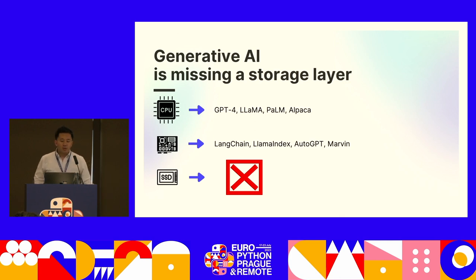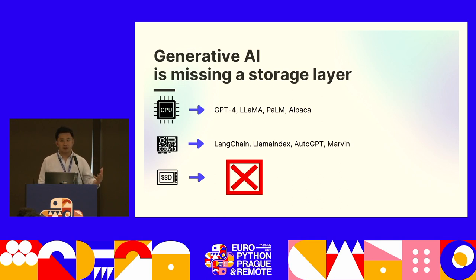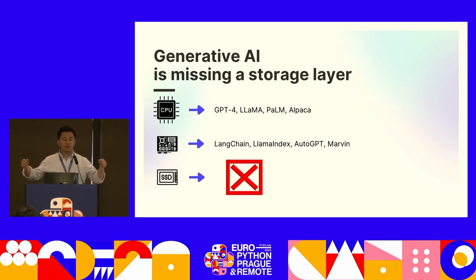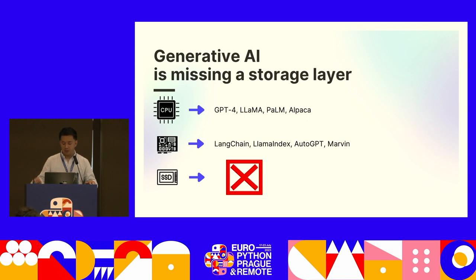The core pain point I've seen in this space for generative AI is that we're missing a storage layer. If you break the ecosystem down into analogies to computer components, the models themselves are like the CPU, the different frameworks from LangChain to Marvin are like the motherboard — everything plugs into it. But when it comes to the storage layer for vectors and raw data, especially multimodal, I would argue there's no great solution.